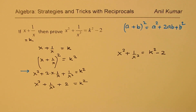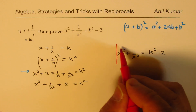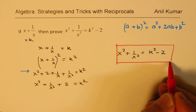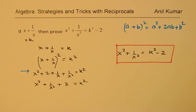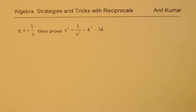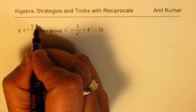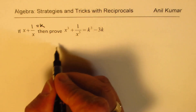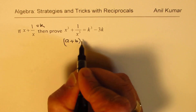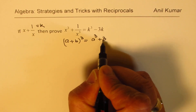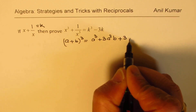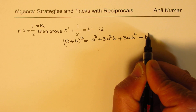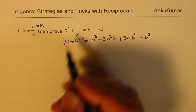It's a simple derivation, and once you remember this, you can apply the formula in a multiple choice question and get the result in a few seconds. Now let's see what happens with the cubic case. Recall that (a + b)³ = a³ + 3a²b + 3ab² + b³. We are going to use this formula to get our next result.